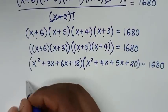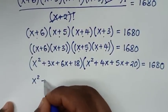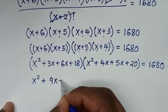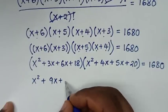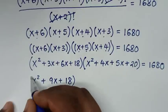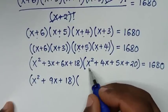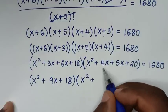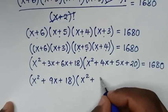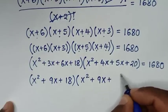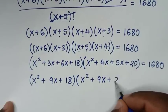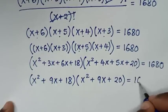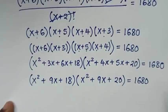So the first bracket simplifies to x² + 9x + 18, and the second bracket simplifies to x² + 9x + 20, and their product is equal to 1680.